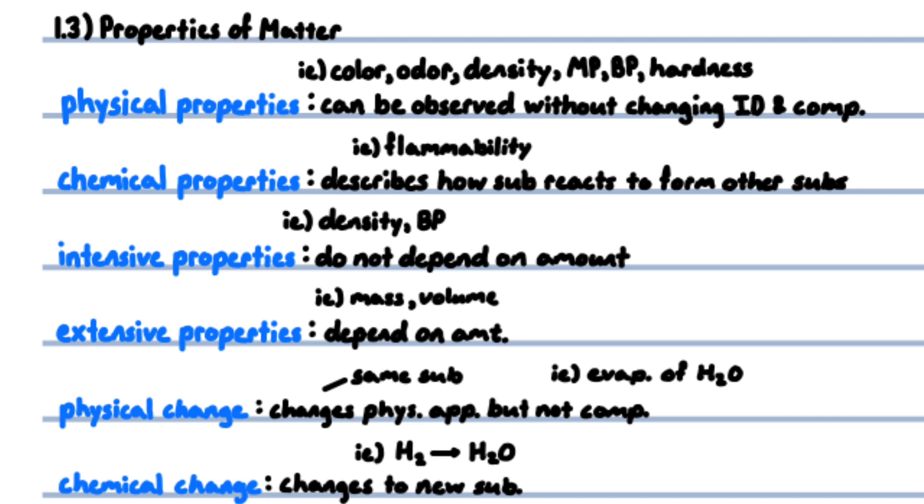Chemical properties describe how a substance may change or react to form a new substance, for example, flammability. Intensive properties do not depend on the amount of sample, such as density and boiling point. One small pot of water and one large pot of water both boil at 100 degrees Celsius at one atmosphere of pressure. Extensive properties depend on the amount of sample, for example, mass and volume change depending on how much matter is present.